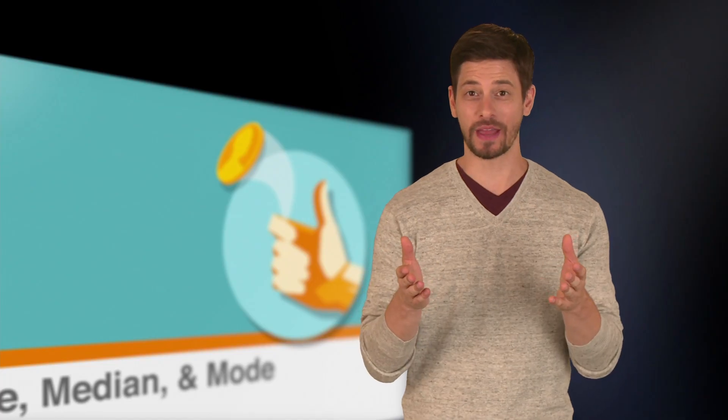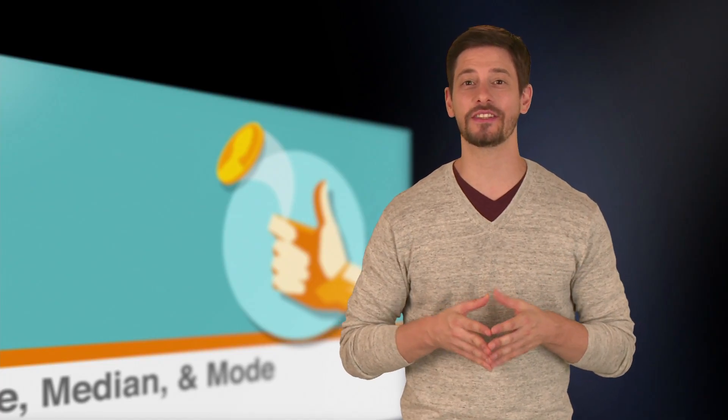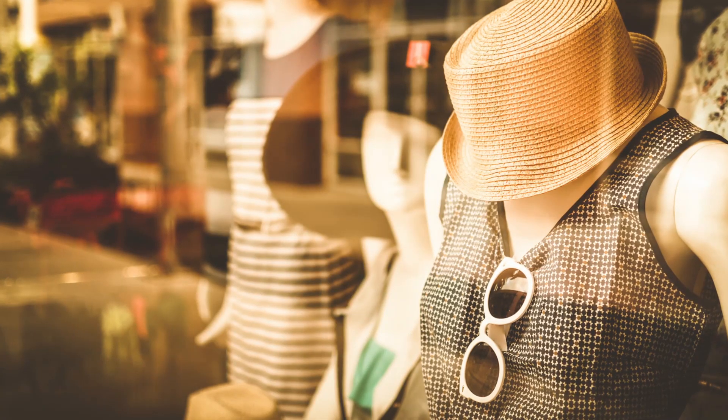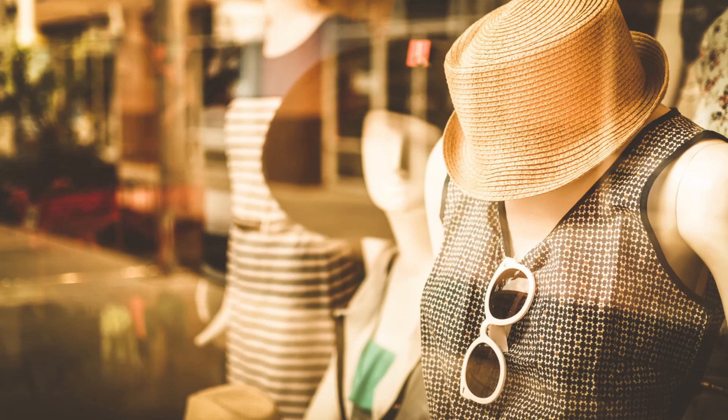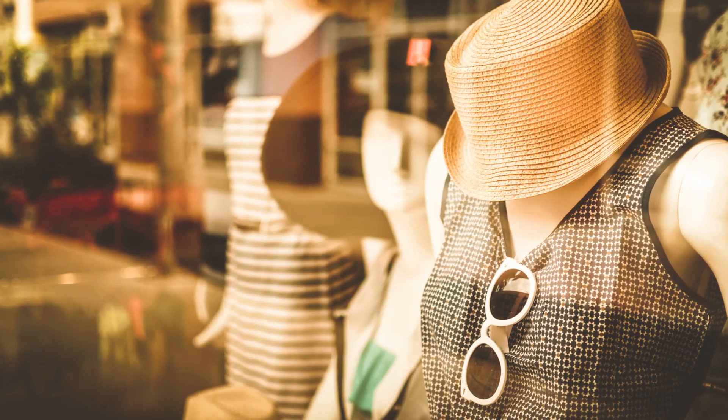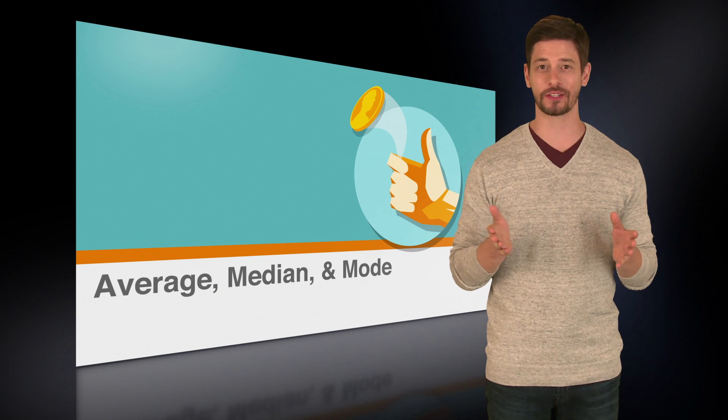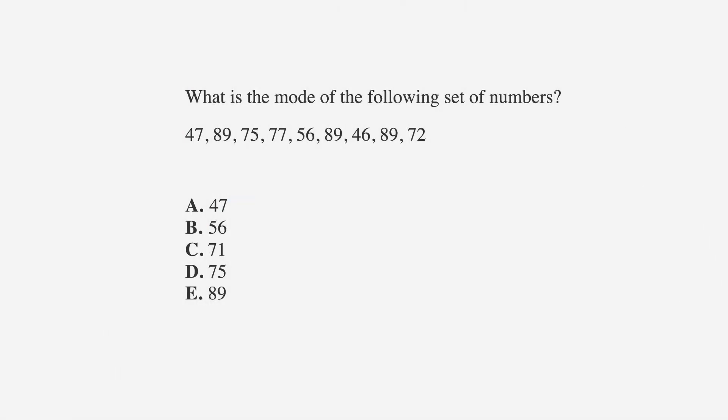The last thing you might be asked to find on the ACT is the mode of a set of numbers. You French buffs might notice that it's really similar to the French word for in fashion. You can almost think of it as a number that's just that, in fashion. Mode is the number that occurs most in a set of numbers. Now, let's try a mode question from the ACT.